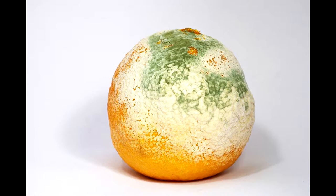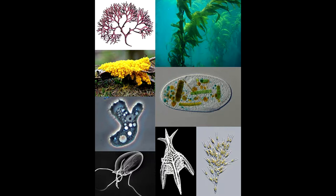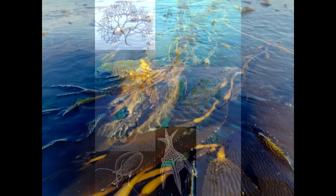Protists are eukaryotic organisms, meaning they have cells with a nucleus. They may be the most diverse biological kingdom, and are difficult to classify. Certain protists reproduce sexually, while others reproduce asexually, which is a type of reproduction that involves only one parent. Giant kelp are an example of a protist.